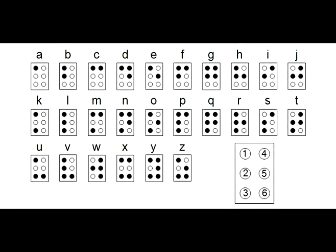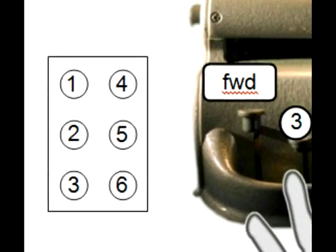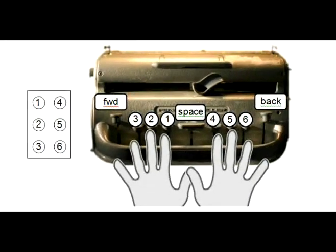Braille is a code that uses combinations of six dots to represent letters of the alphabet. The Perkins Brailler is a standard Braille keyboard. There are six main keys, one for each dot in the Braille cell. To type a Braille character, you press combinations of keys, or chords, at the same time.